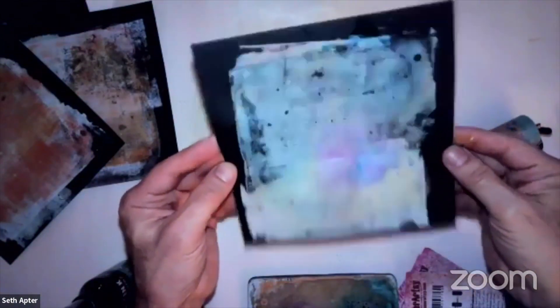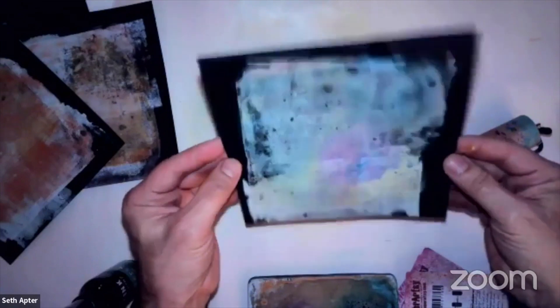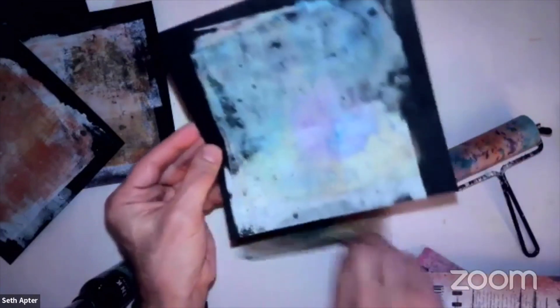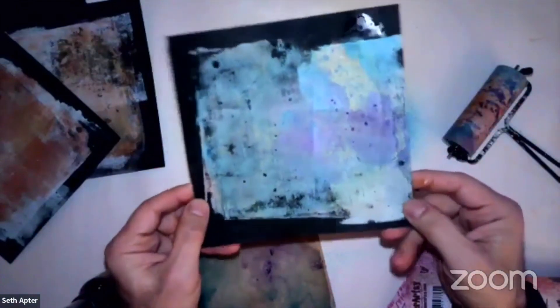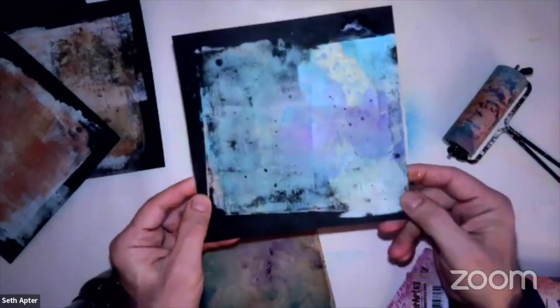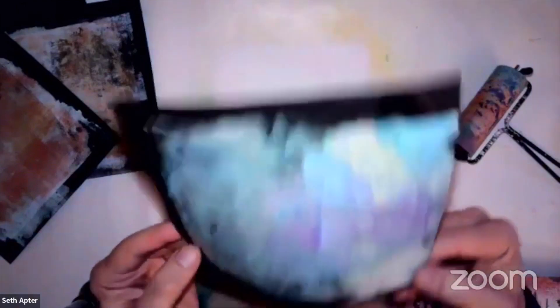But you begin to get that depth. And because it is translucent, the dye sprays, you don't lose what's underneath. Sprays on the jelly plate are one of my favorite things. I just love the effects.